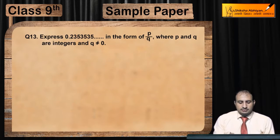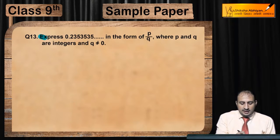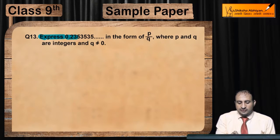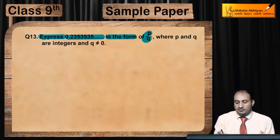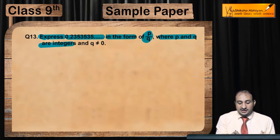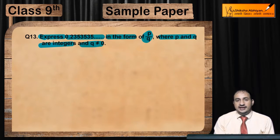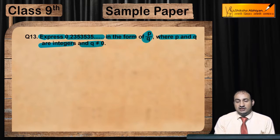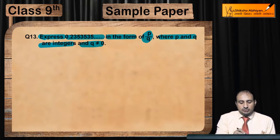Now see question 13. Express 0.2353535... in the form of p by q, where p and q are integers and q is not equal to zero. तो ये repeating and non-terminating decimal fraction, decimal number है. इसे हमें fraction की form में लाना है.